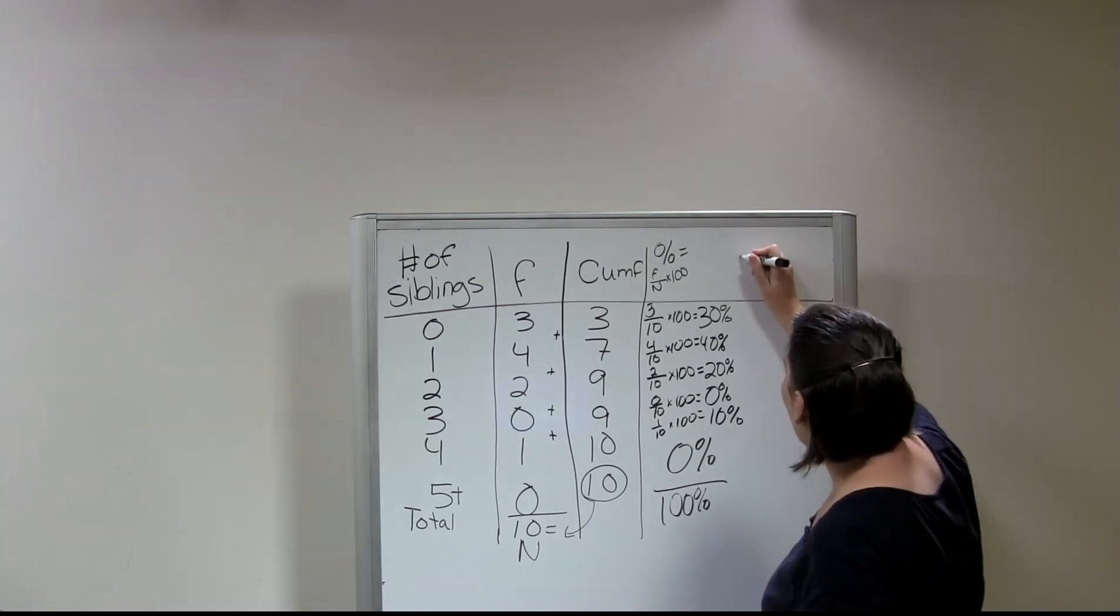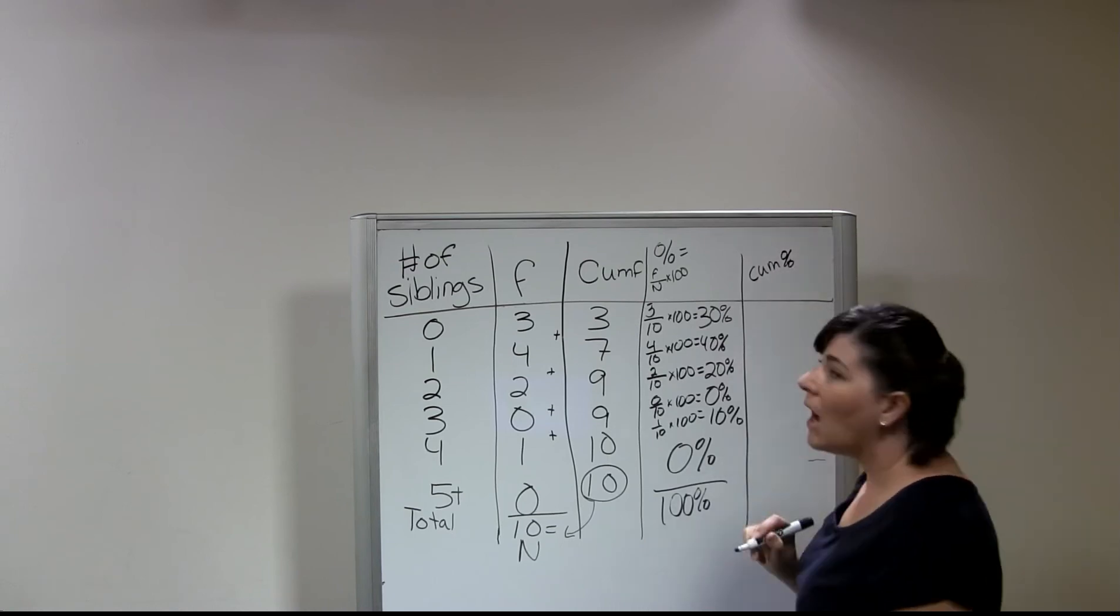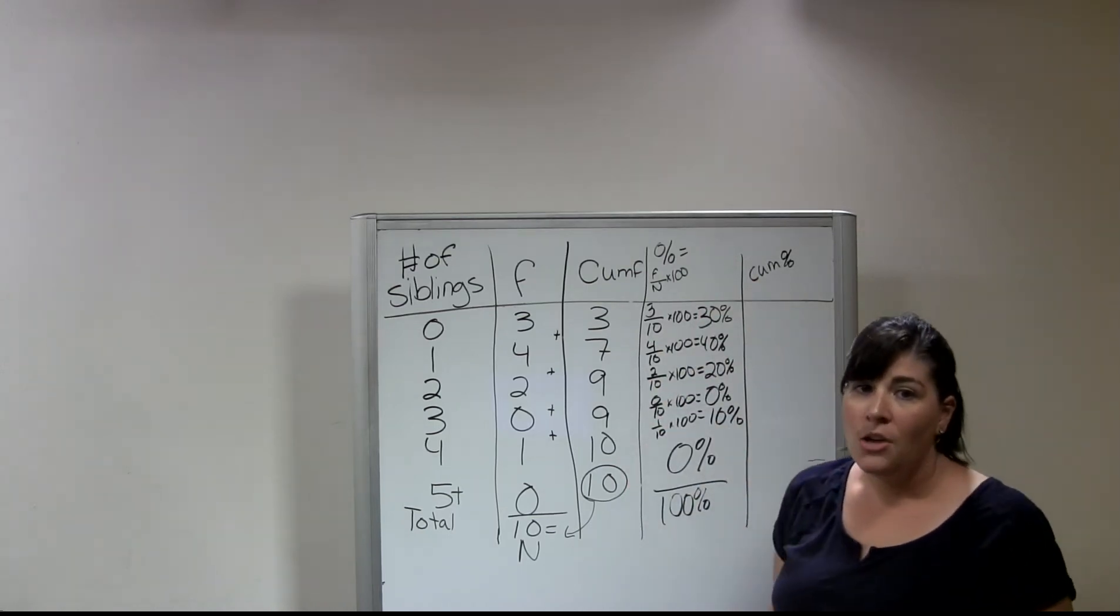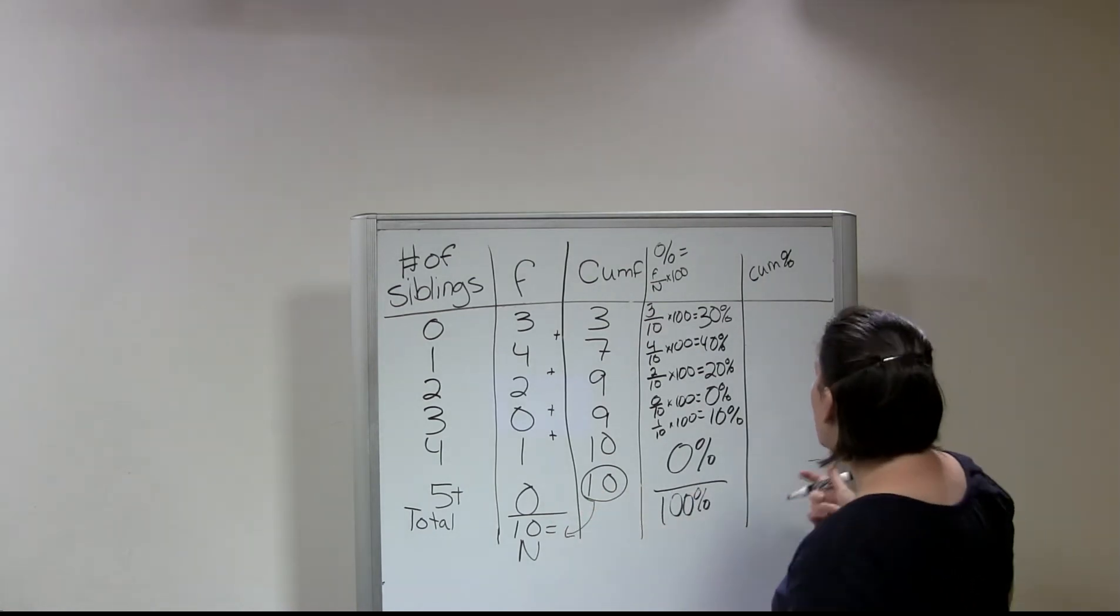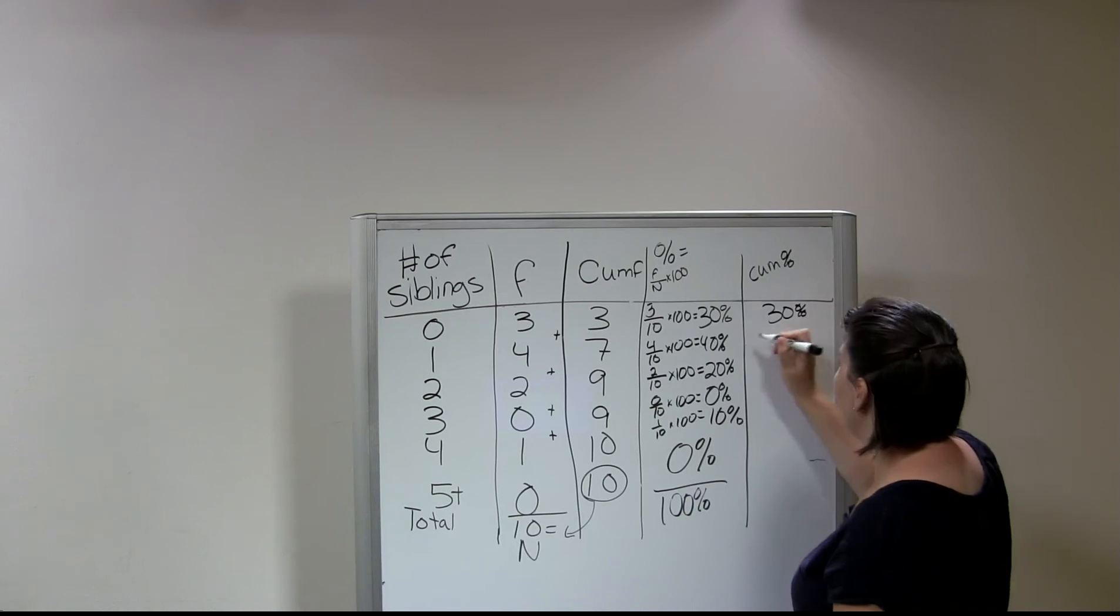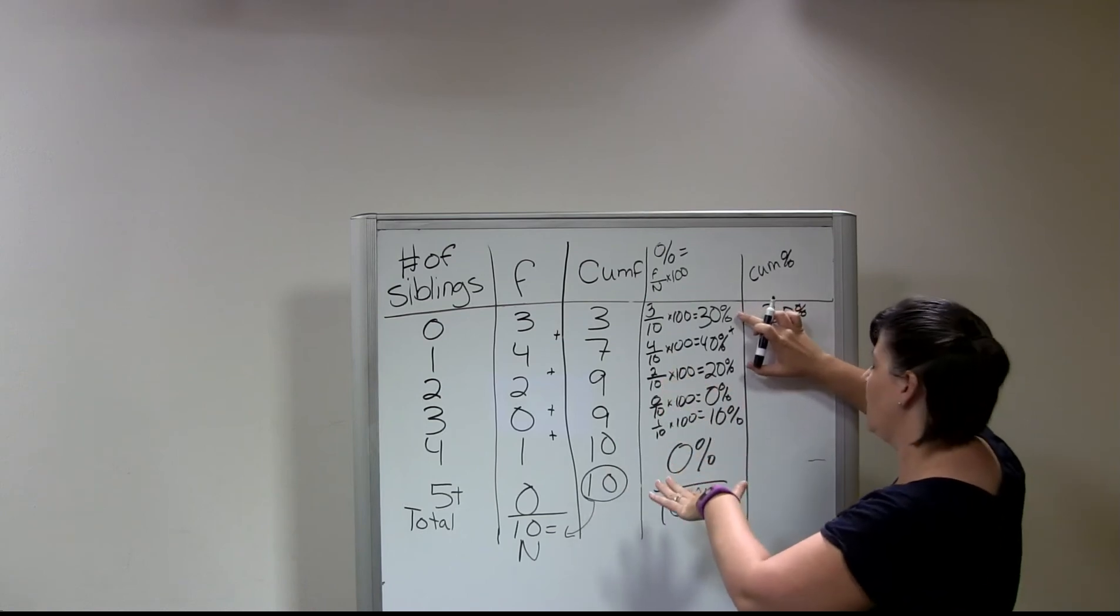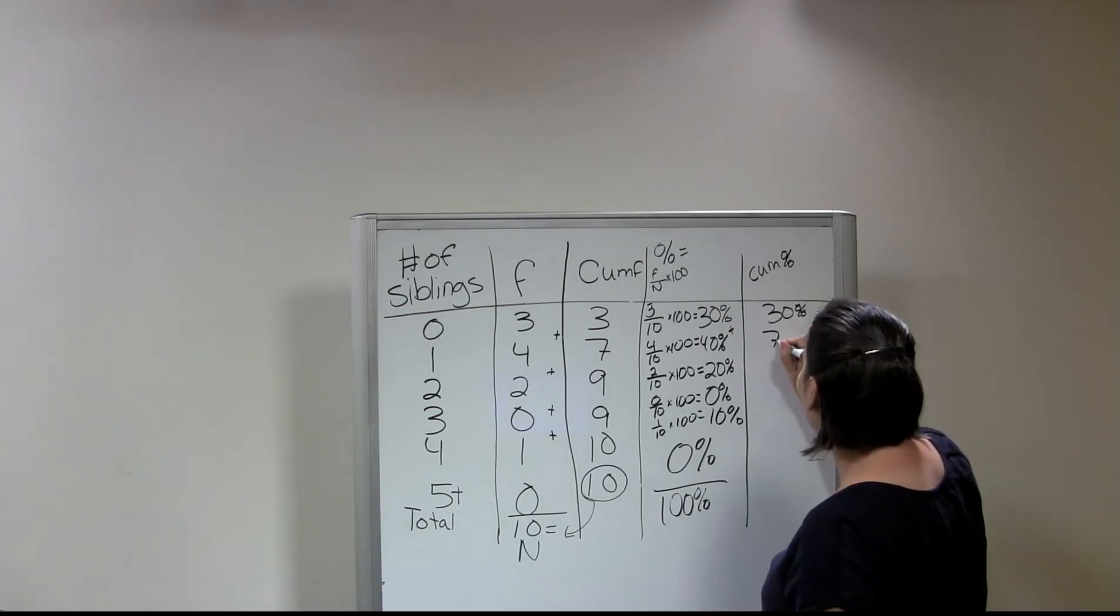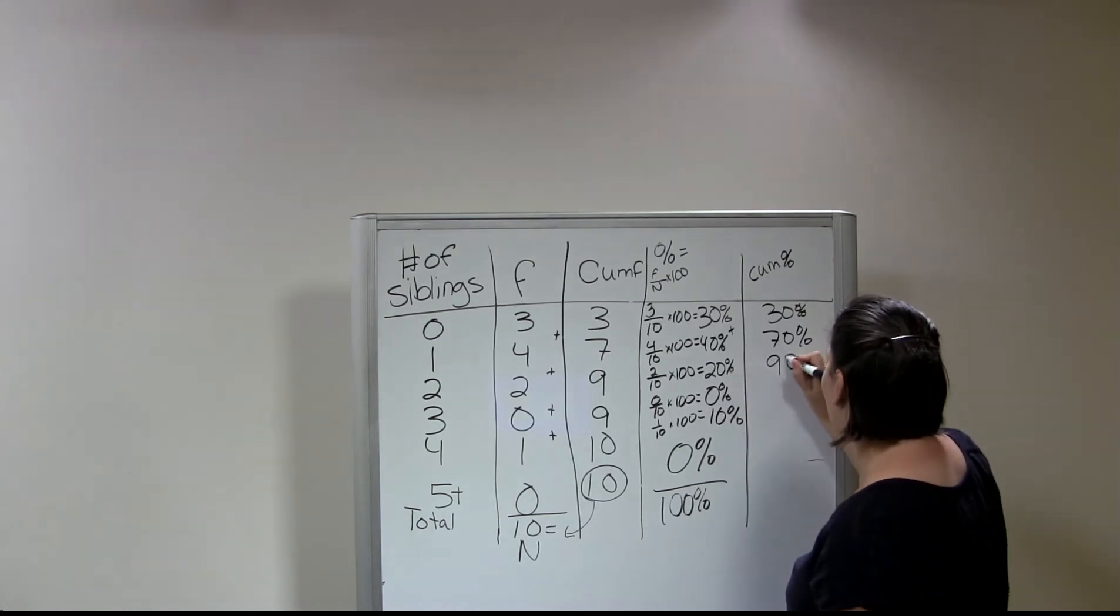So that's our fourth column. Now we have one more column, and that last column is going to be the cumulative percent. And so the cumulative percent column is the same as the cumulative frequency, only you're doing it with the percentages. So we can simply add the percentages as we go. So it's going to be kind of a running total of the percentages. So if we start here, we're going to have in this first box, we're going to have 30 percent. And then we're going to add the percent for one sibling plus the percent for zero siblings. And so you're going to have 70 percent. So then we're going to add the percent for two siblings, which is 20 percent. And so we'll have a total of 90 percent.